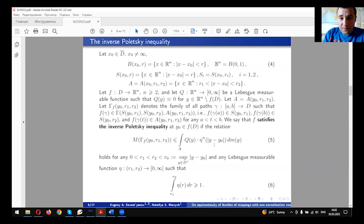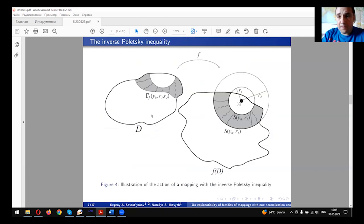We say that f satisfies the inverse Poletsky inequality at the point y_0 if relation (5) holds for any so-called admissible function η. Admissible means that η is a Lebesgue measurable function with the inequality (6). Let us see the following picture. A mapping f is defined in the domain D. Assume that y_0 is a point in the image under mapping f in R^n, in f(D).